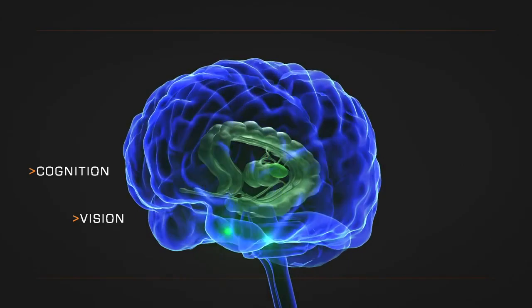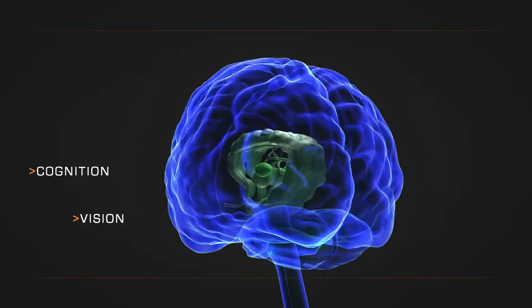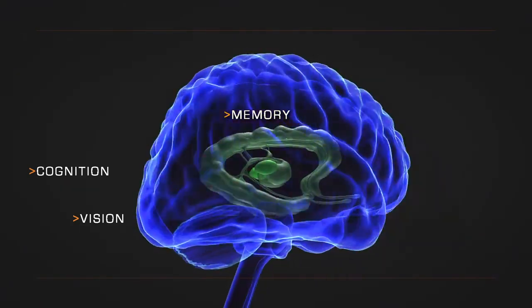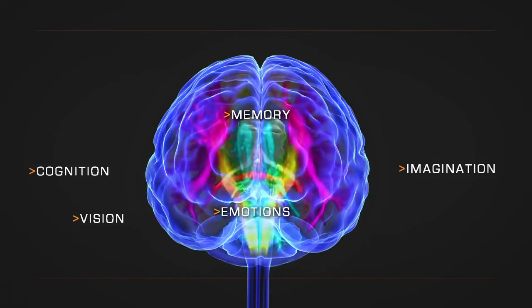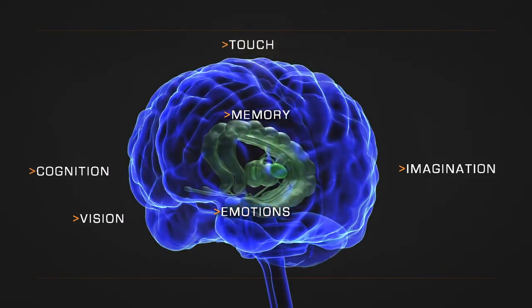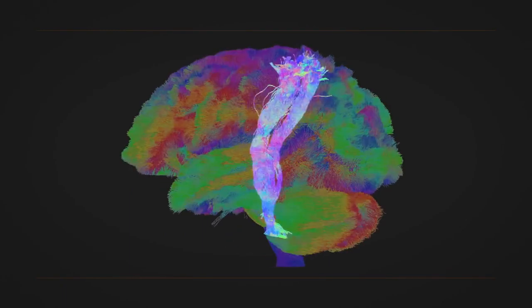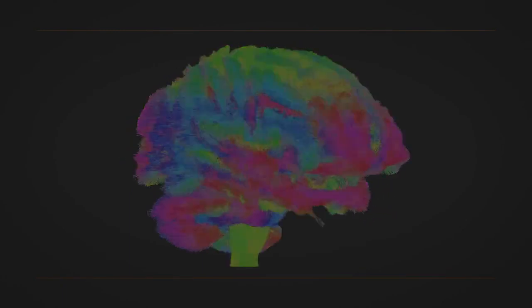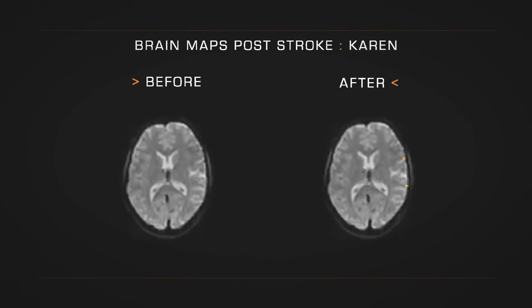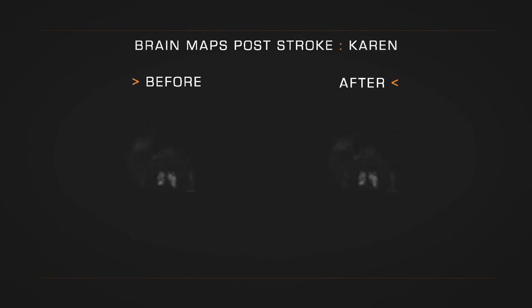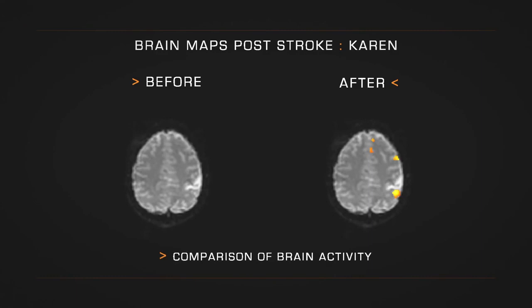Brain networks are important in recovery. Even though fiber tracts may be disrupted, brain activity can remap to damaged sensory regions and form new connections to other regions and networks in the brain, as scientific evidence has shown for Karen.